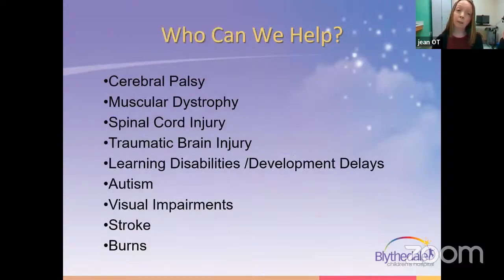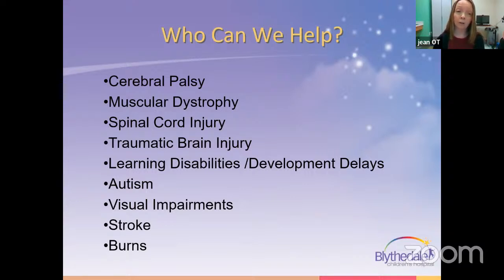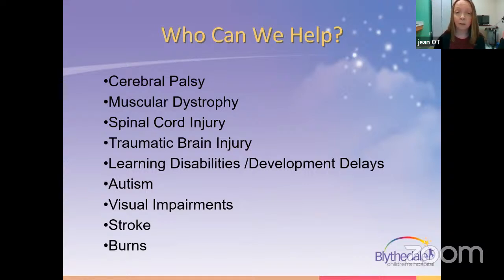This gives an idea of how many different diagnoses we see when assessing children for assistive technology. Some are listed here, such as cerebral palsy, muscular dystrophy, spinal cord injuries, TBIs, those with learning disabilities or developmental delays, autism, visual impairment, stroke, and burns, to name a few.